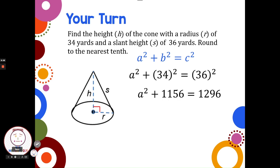Then we just want to solve for a. Subtract 1,156 from each side. Then we need to take the square root. And the square root of 140 is going to give us a decimal. Our directions are round to the nearest tenth. So I'm going to put that in my calculator, find the square root of 140, and I'm going to round that to 11.8 feet.